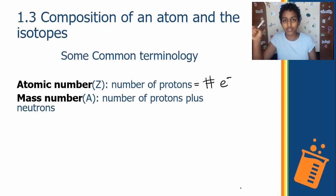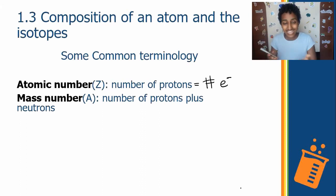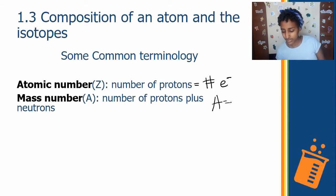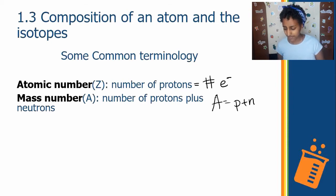It's just a number — you count how many particles are in the nucleus, the sum of the protons and the neutrons. Mass number A equals the number of protons plus the number of neutrons. It's as simple as that.